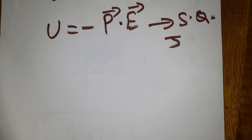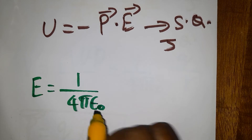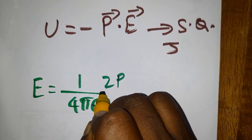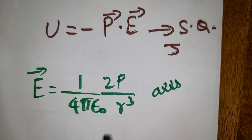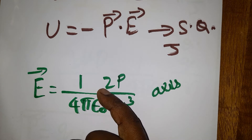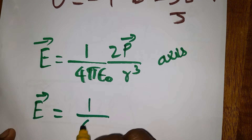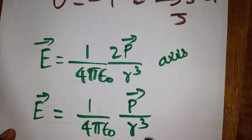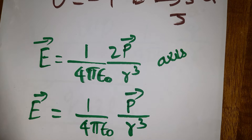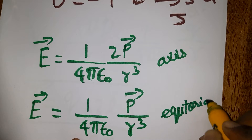The electric field due to the axial line of a dipole: E = (1/4πε₀)(2p/r³). The electric field due to the equatorial line of a dipole: E = (1/4πε₀)(p/r³). Note: the axial formula has a factor of 2 and r³, while the equatorial formula has r³ without the factor of 2.